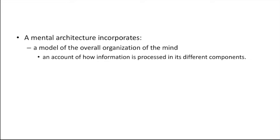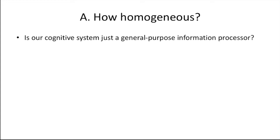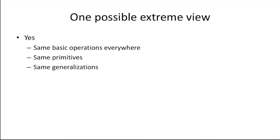So going back to our question regarding homogeneity, one way of posing it is by asking: is our cognitive system just a general-purpose information processor? One possible extreme view says yes, it is. In this view, the cognitive system would have the same basic operations everywhere. And an account of cognition would deploy the same primitives in the same explanations of all sorts of phenomena, and the same generalizations would apply across the board. Under this view, our cognitive system is functionally undifferentiated—homogeneous. So exactly the same kind of information processing happens everywhere.